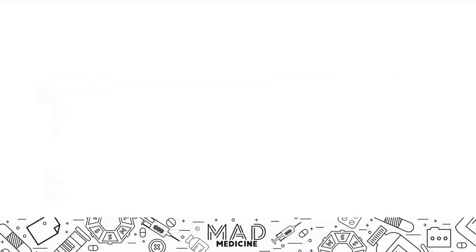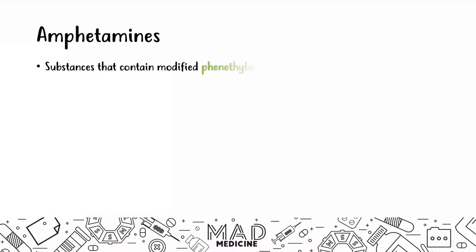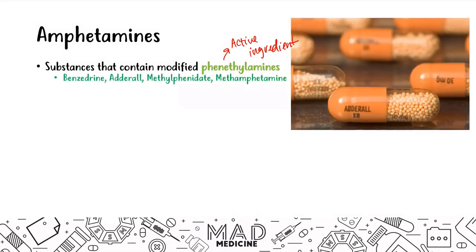Let's dive deep into amphetamines because that's very high yield. Amphetamines are substances that contain phenylethylamines — phenylethylamines are the main active ingredient. The main drugs classified as amphetamines are Benzedrine, Adderall, methylphenidate, and methamphetamine. Adderall and methylphenidate are often used for ADHD, as we discussed in our ADHD videos.